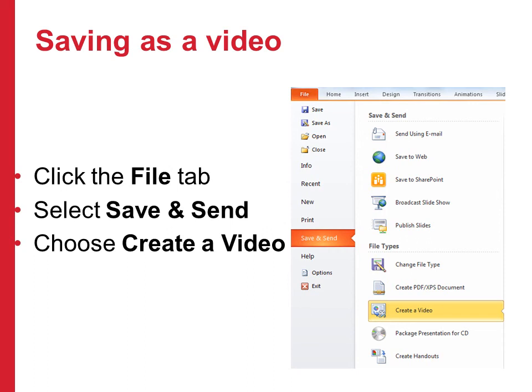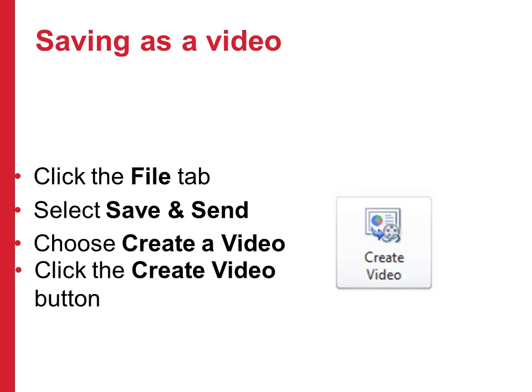We've saved our presentation with the audio and done all the timings, so now we're ready to publish it as a video. Click on the File tab in the ribbon and choose Save and Send, which gives us the option to create a video. Click Create Video, then click the Create Video button and leave the settings as default — if timings have been set it will use those; if not, it will move slides on when the audio finishes. If there's no audio for a slide it will default to five seconds for that slide.